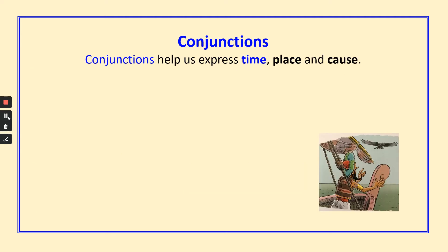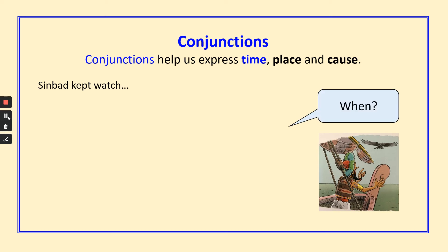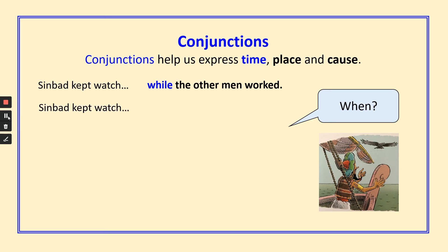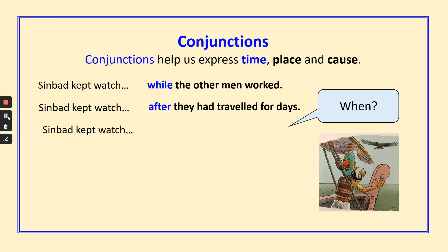Conjunctions help us express time, place and cause. Sinbad kept watch — when did he keep watch? While the other men worked. Sinbad kept watch after they had travelled for days. Sinbad kept watch when he was hoping for land.